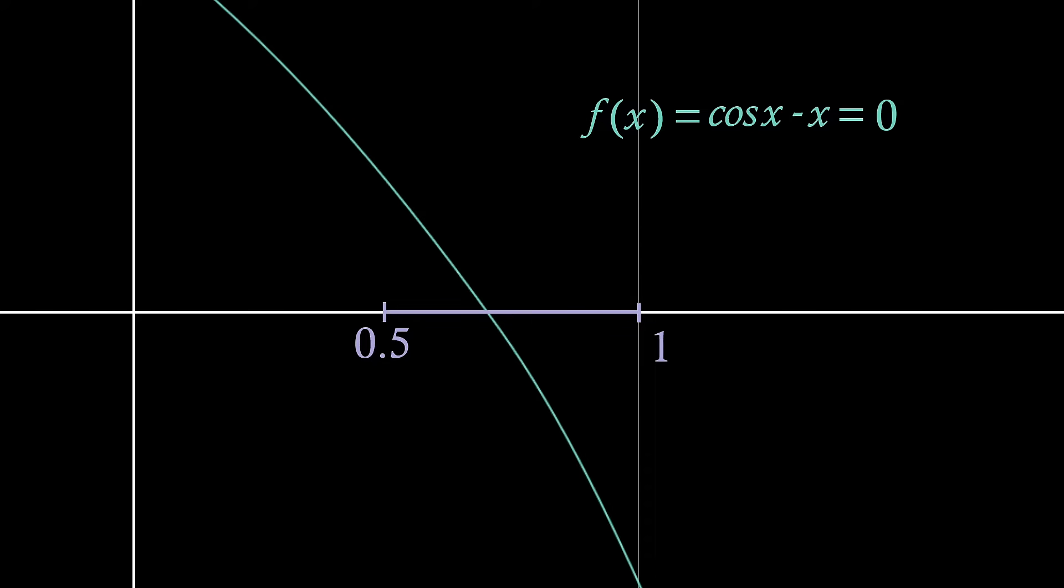If we repeat this, taking a midpoint of each new bracket and finding which side the root sits, then we can see how gradually we can attain a better and better estimate of our root, with each new iteration halving our bracket size. Doing this for our function, f of x equals cos x minus x, we can find the root to be around 0.739085, just using a handful of iterations.